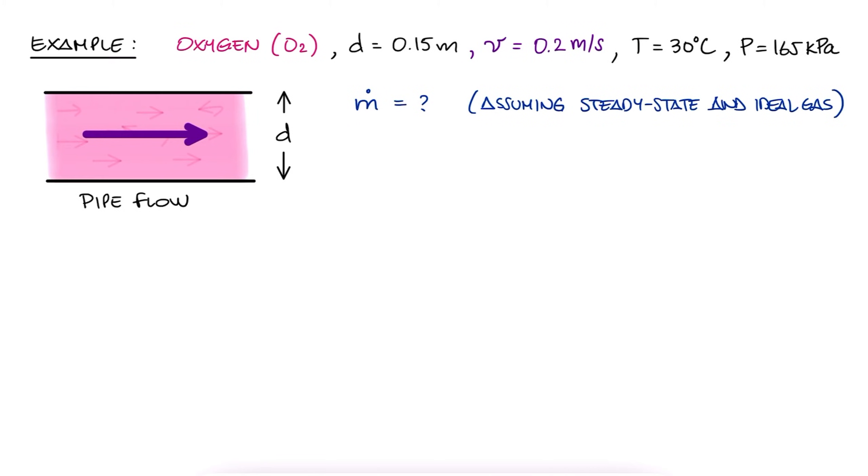To calculate the mass flow rate, we know that we need the velocity of the fluid, the area, and the density. Of course, since we're more used to using specific volume, we'll write this in terms of specific volume instead. The velocity was given, and the area can be easily calculated with the diameter of the pipe. It would be the area of a circle with that diameter.